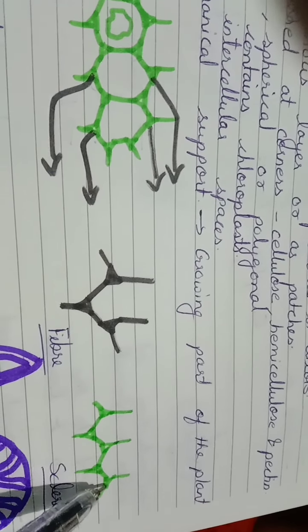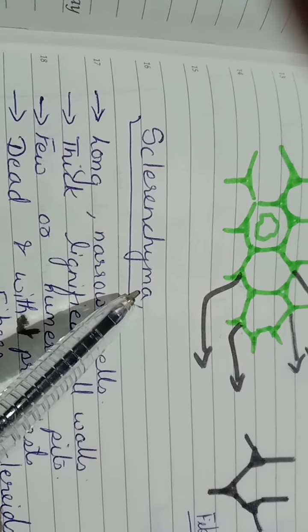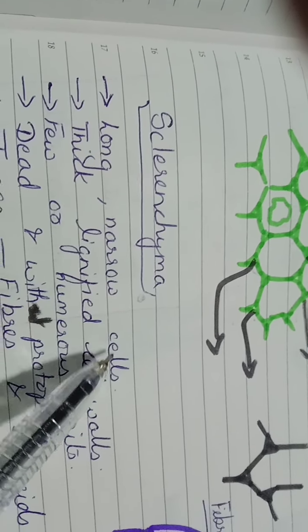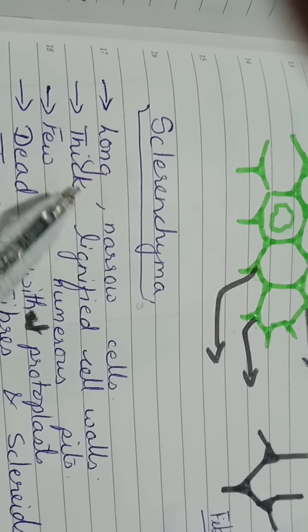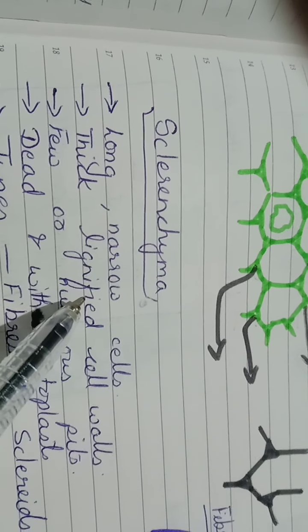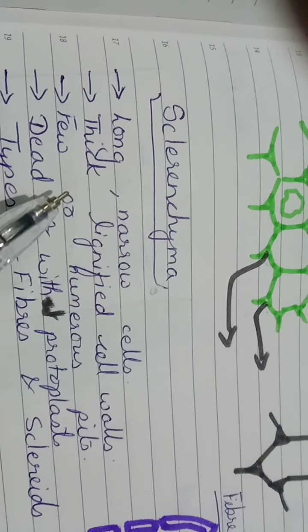Now another simple tissue is sclerenchyma. It consists of long, narrow cells which have thick lignified cell walls. Lignin deposition is very important. It has few or numerous pits in the cell wall. Mainly sclerenchyma is dead without protoplast.